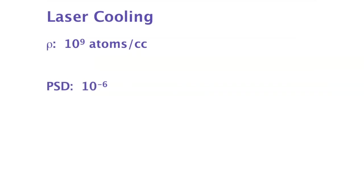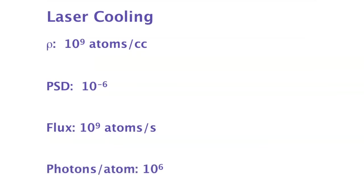Let's look at laser cooling today. For atoms that can be laser cooled, the density of ultra-cold atoms produced is approximately 10⁹ atoms per cubic centimeter, and the phase space density is 10⁻⁶. To reach quantum degeneracy you need order unity, so you have to span six orders of magnitude — which people have done. The flux is about 10⁹ atoms per second, and it costs roughly 10⁶ photons per atom, so it is not very efficient.